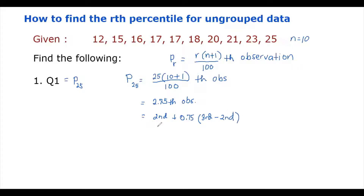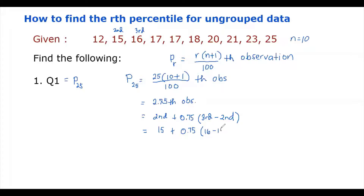This is the interpolation technique. The second observation is 15, so we compute 15 plus 0.75 times (16 minus 15), where 16 is the third observation and 15 is the second. This gives us 15.75, so the 25th percentile is 15.75.